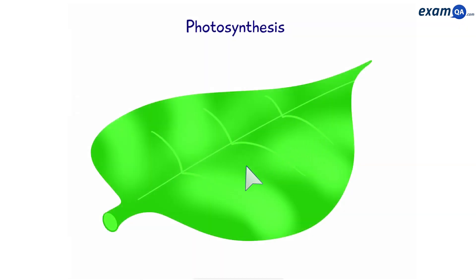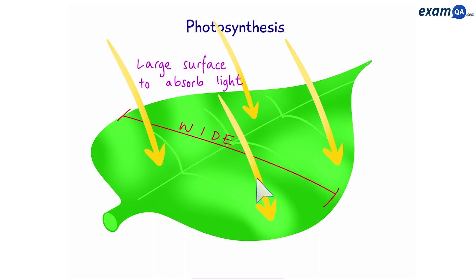Photosynthesis happens mainly in the leaves. So let's see what structure the leaves have, which make them so great at doing photosynthesis. Number one, they are wide, which means there's a large surface for them to absorb sunlight. On top of that, most of the chlorophyll is located on top of the leaf, which means it's more likely to get the sunlight.